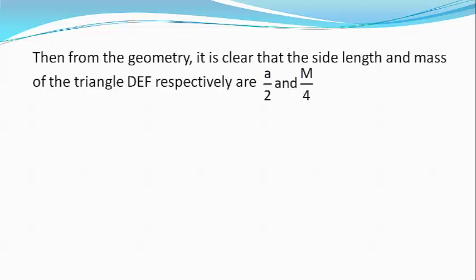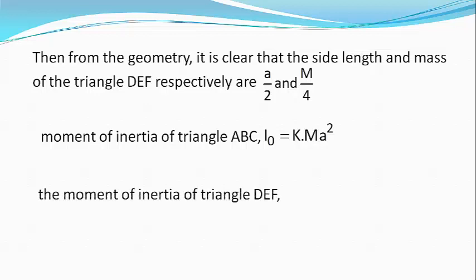Let moment of inertia of the triangle ABC, I0 equals K times MA square. Then the moment of inertia of the triangle DEF, I1 equals K into M divided by 4 into A by 2 whole square, or I1 equals K into MA square divided by 16, which equals 1 by 16 into I0.